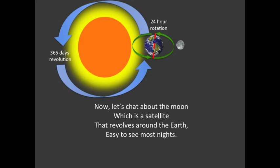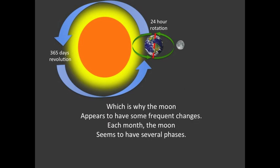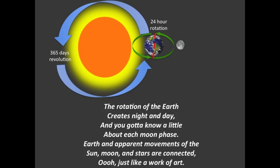The moon is a satellite that revolves around the earth, easy to see most nights. The moon is made of rock and doesn't make its own light — it acts like a mirror and reflects sunlight, which is why the moon appears to change. Each month the moon seems to have several phases: if you see half the moon, we call it a quarter; the whole moon is full; and if you see none of the moon, it's called a new moon. Nighttime will be extremely dark without the moon.